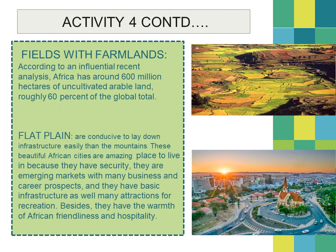Moving on to farmlands: there are around 600 million hectares of uncultivable arable land — roughly 60 percent of it. Then the flat plain — how this flat plain is helpful in setting up a beautiful city. You can see one of Africa's beautiful cities, where the flat plain has helped in building roads, buildings, hospitals, schools, administrative buildings, railway lines, airports, and ports. All of that is possible with flat plains.